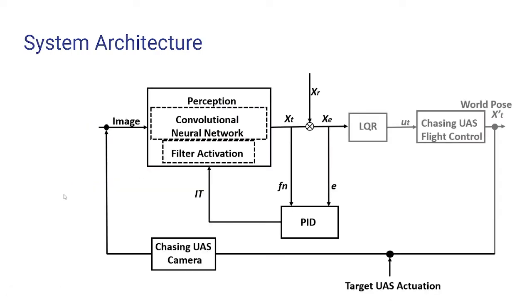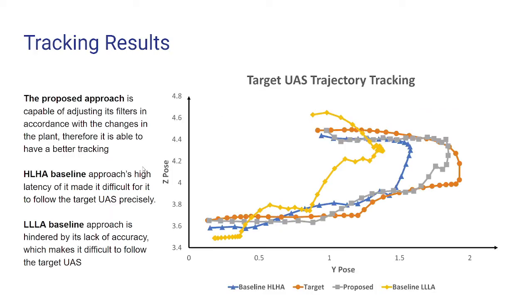You can see the architecture of the system here: the chasing UAS takes images of the world and feeds them to the convolutional network, which provides the pose of the target UAS. This pose is given to the LQR to generate the appropriate motion control strategy for the chasing UAS. Based upon the number of consecutive false negatives and the error between the chasing UAS and the target UAS, the PID decides a required impact threshold, which is used to activate or deactivate certain filters in the convolutional neural network.